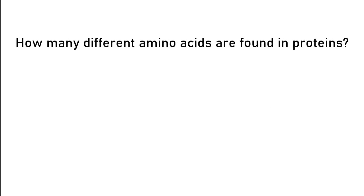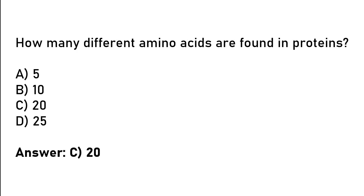How many different amino acids are found in proteins? 5, 10, 20, 25. So the correct answer is option C. 20.